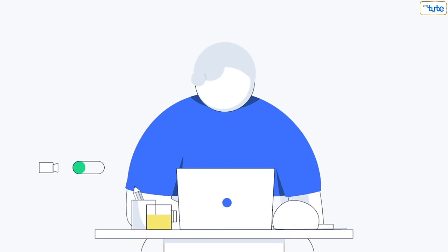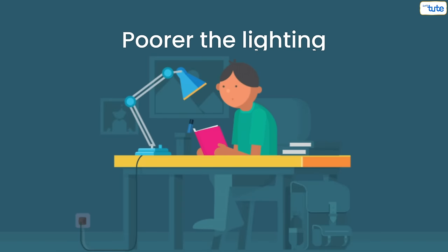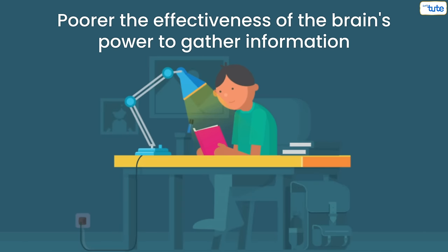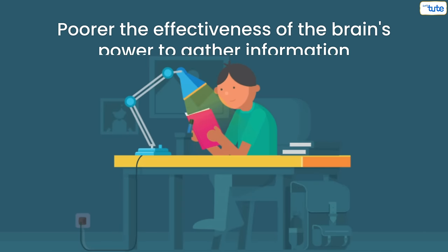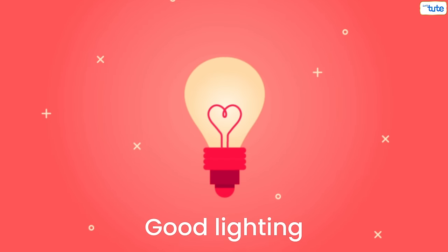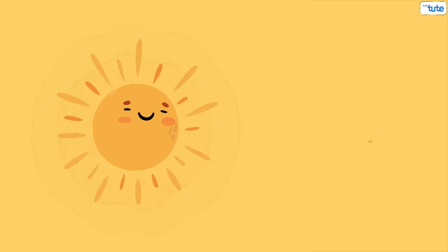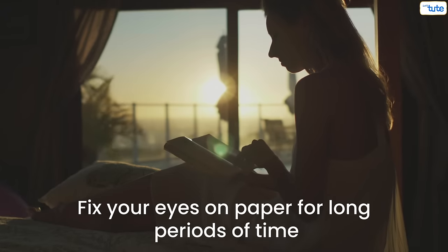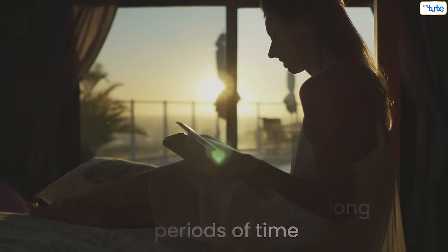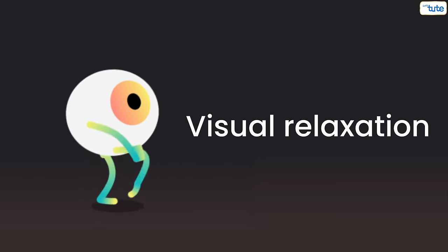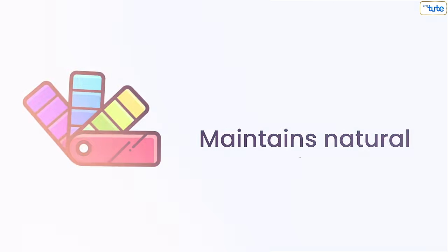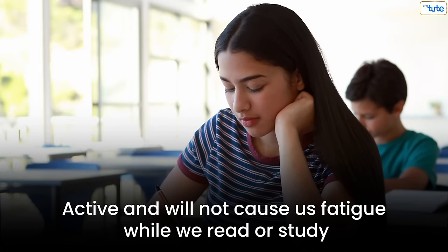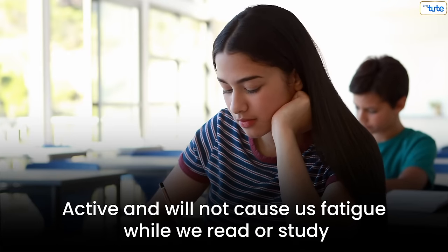Well, researchers have also proven that poorer the lighting, the poorer the effectiveness of the brain's power to gather information that you have been studying. The fact is that good lighting, that could also be natural light from the sun, is best when you have to fix your eyes on paper for a long period of time. Light also favors visual relaxation and maintains natural shades in colors so it will keep us active and not cause us fatigue while we read or study.